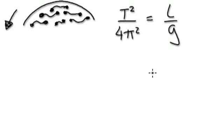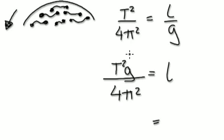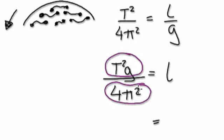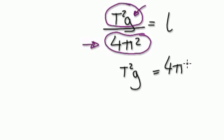Now G is at the bottom. Here's another way of doing it — you don't have to take the reciprocal. You can multiply both sides by G. So this would be T squared G over 4 pi squared, and what's left on the right hand side would be L. You're killing off the G because it's at the bottom. So you get T squared G equals 4 pi squared L, or 4 L pi squared — it doesn't matter.